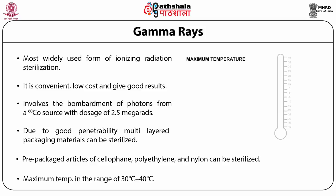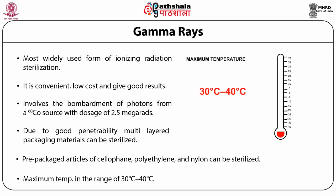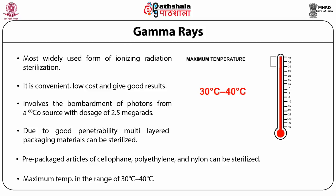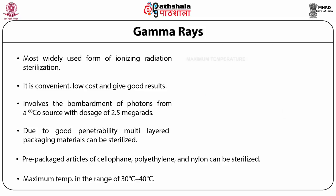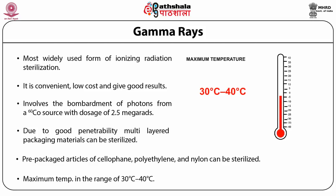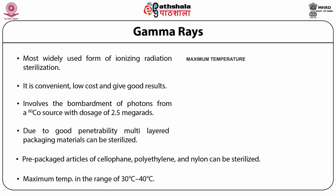Pre-packaged articles may also be gamma sterilized since many materials such as cellophane, polyethylene and nylon can be penetrated by gamma rays. Gamma rays have 5 times the penetration capability of electron beam radiation. Gamma radiation sterilization usually employs Co-60 as the radioisotope source with a dosage of generally 25 kGy, and maximum temperatures are usually in the range of 30 to 40 degrees Celsius.